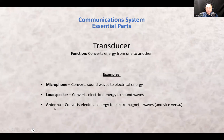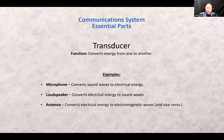Another example of a transducer is an antenna. It converts electrical energy into electromagnetic waves, and vice versa — it can detect electromagnetic waves and convert them into electrical energy. So an antenna is a bi-directional device.